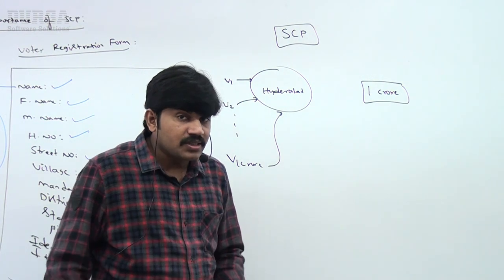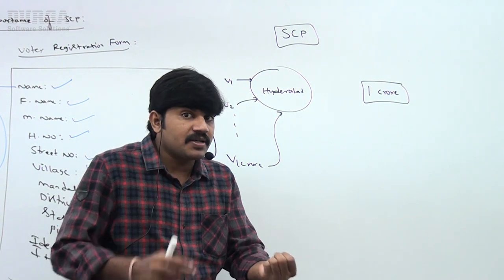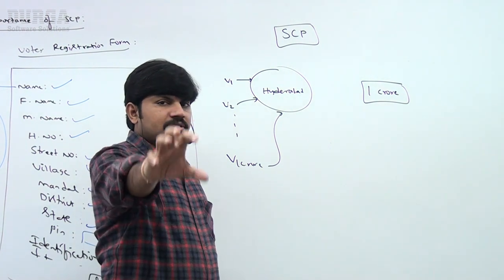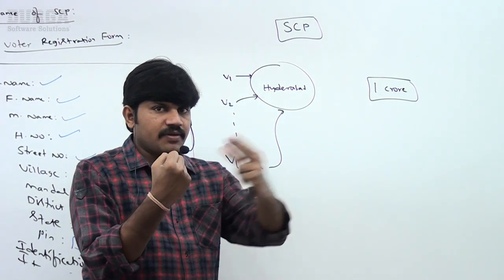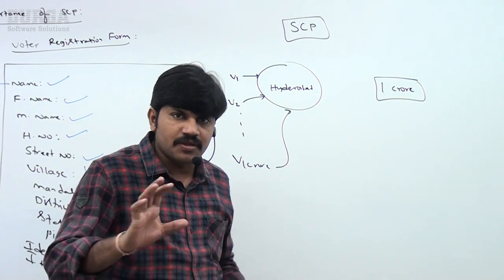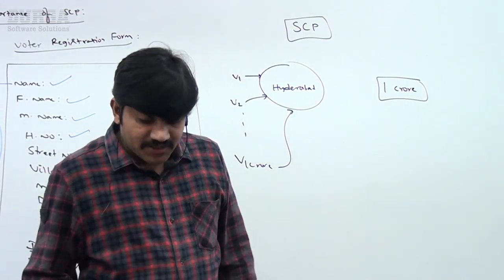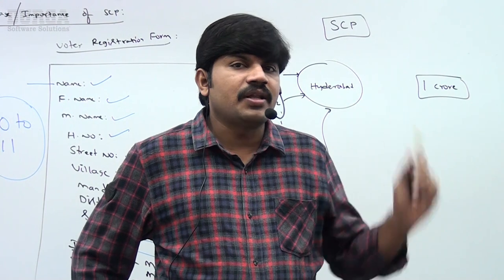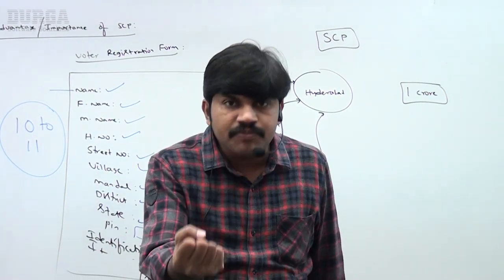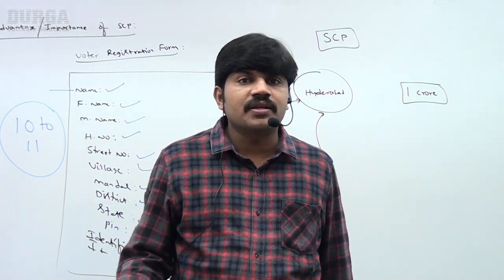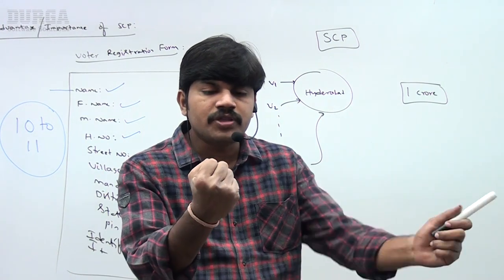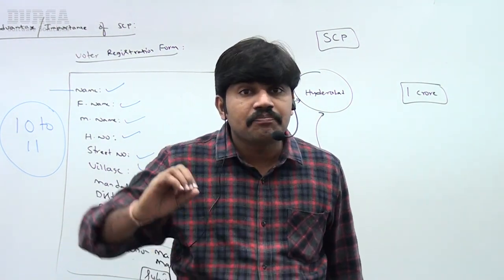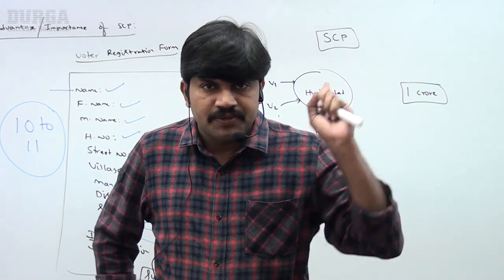In the last example, the same object in SCP will be referenced with multiple references. So memory utilization will be improved. The first point: in SCP, a single object can be referenced with multiple references. What is the advantage of SCP? In the SCP area, the same object can be reused with multiple references. So instead of creating 1 crore objects, one object with 1 crore references is possible. Performance is going to be improved and memory utilization will be improved. This is the biggest advantage of the SCP concept.